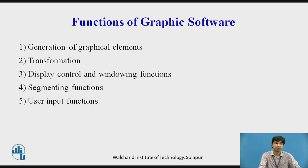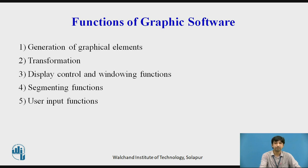Now let's discuss the functions of graphic software. Graphic software permits interaction between the user and the system and is expected to perform various kinds of functions. These include the generation of graphic elements with desired shape, size, orientation, and displaying them on the screen. These functions are combined into five functional groups. The first is generation of graphic elements — 2D graphical entities are sketching elements like dots, lines, circles, arcs, and triangles. Tools like trim, mirror, rotation, and scale are used to edit different graphical elements.